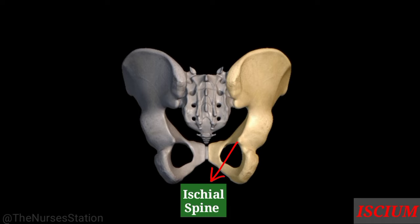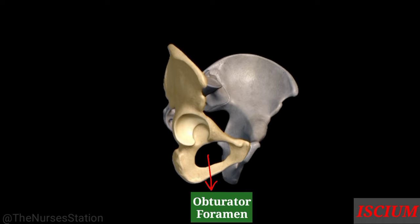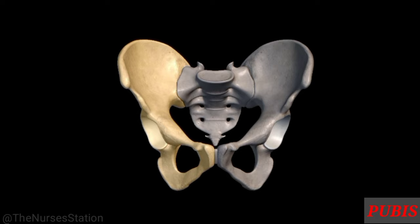Descent of the fetal head during labor is measured in relation to the ischial spine and is called the station of the fetal head. Together the ramus and the pubis surround the obturator foramen, which is the largest foramen in the skeleton.